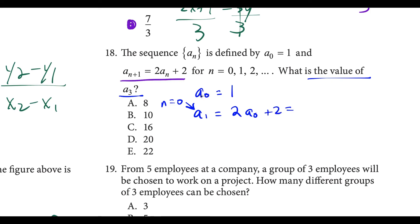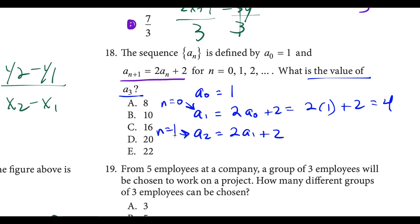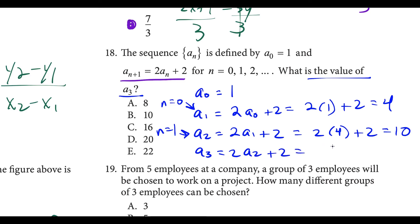Now to find a sub 2, we have 2 times a sub 1 plus 2. With n equals 1: a sub 2 equals 2 times 4 plus 2, which gives 10. Then a sub 3 equals 2 times a sub 2 plus 2 — that's 2 times 10 plus 2, giving us 22. This matches choice E.